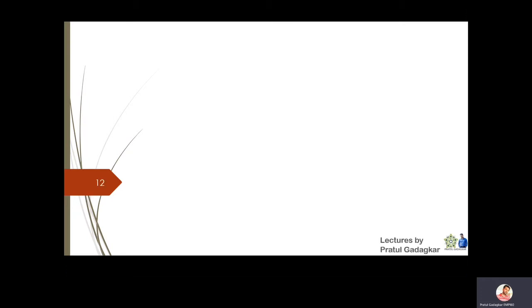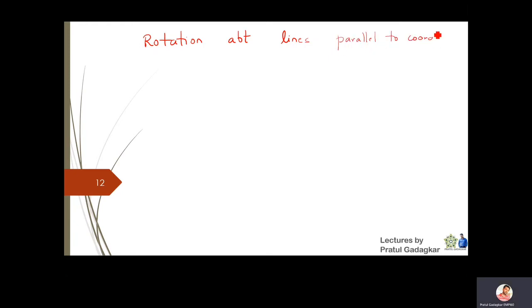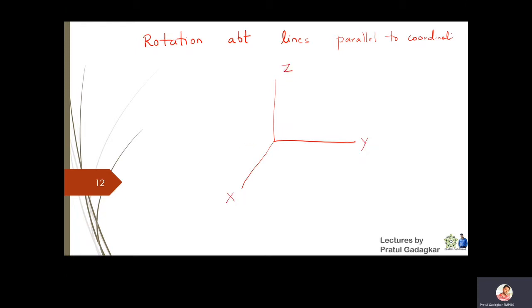In this lecture we are going to study rotation of objects about lines which are parallel to the coordinate axis. We are going to take a line in three-dimensional space which is not arbitrary but parallel to one of the coordinate axes. If I call this x-axis, y-axis, and z-axis, suppose I take a line parallel to the y-axis — how are we going to rotate one particular object by some angle theta about this line L?